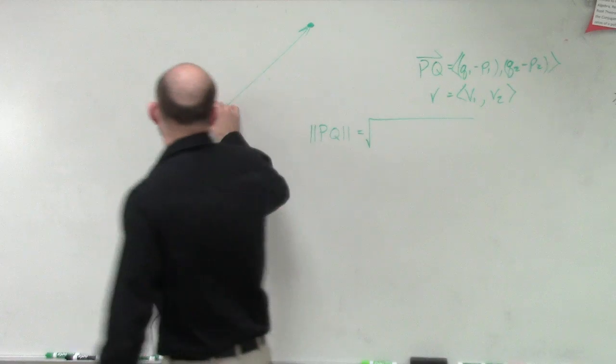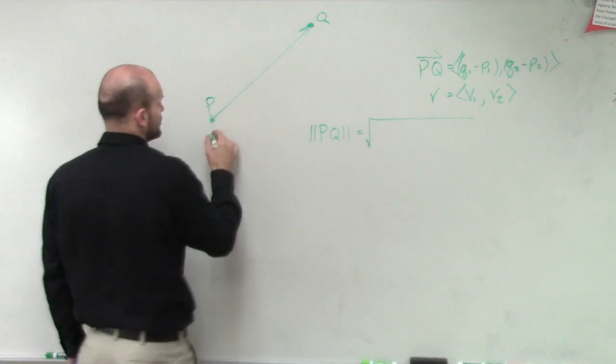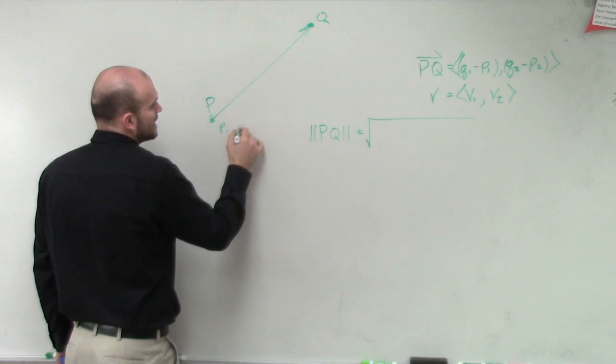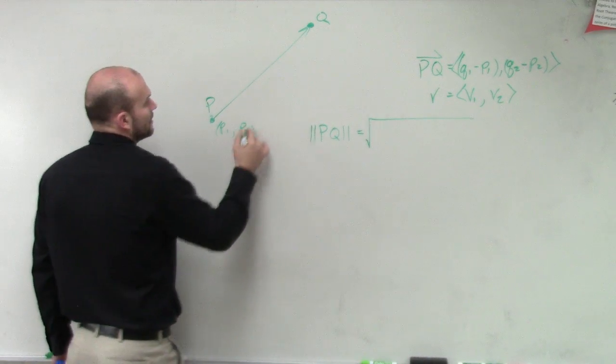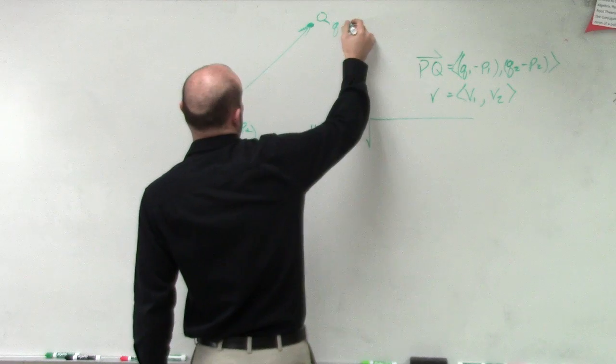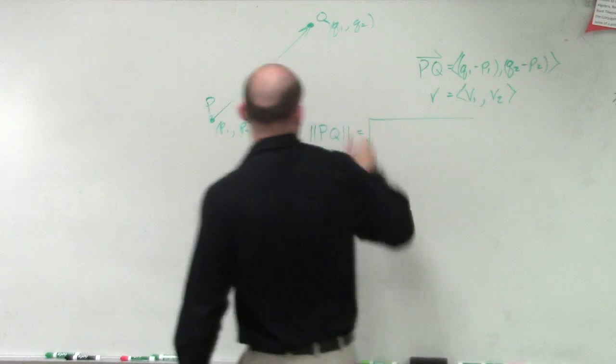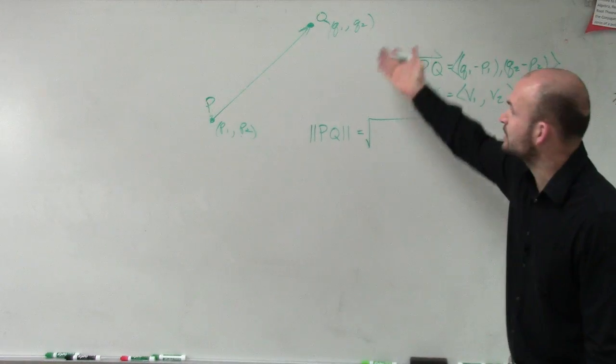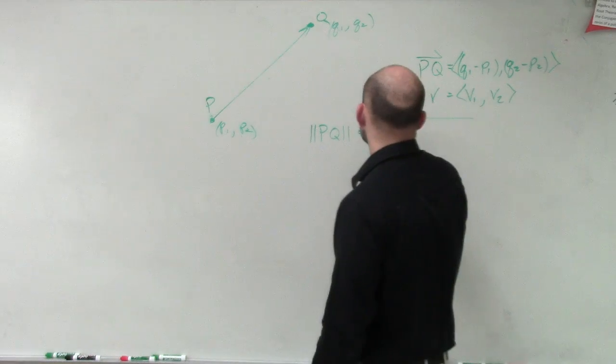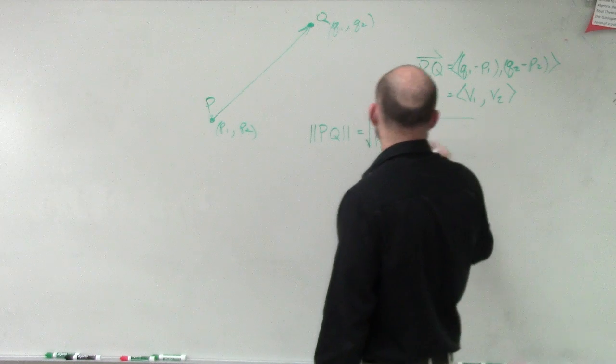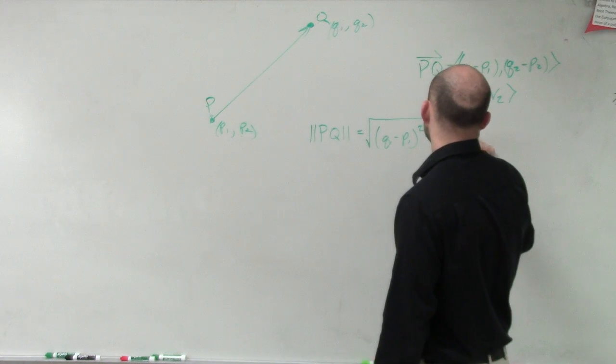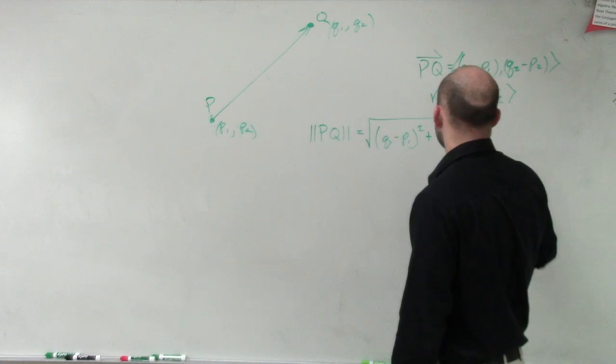However, when dealing with P and Q, here's my P and Q, and here I have P1 comma P2. Here I have Q1 comma Q2. So when plugging them into the distance formula, the change in my x's is going to be Q1 minus P1 squared plus Q2 minus P2 squared.